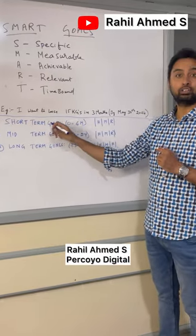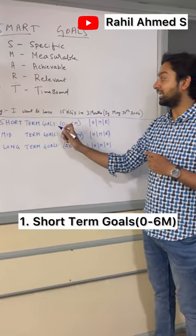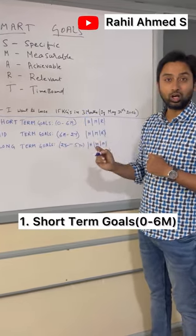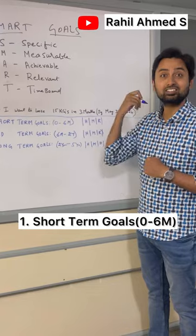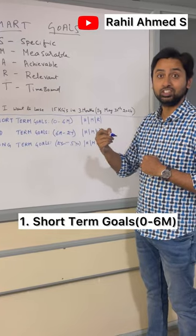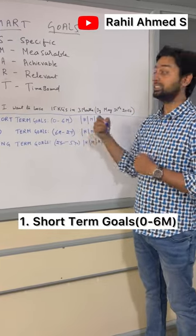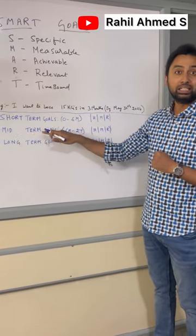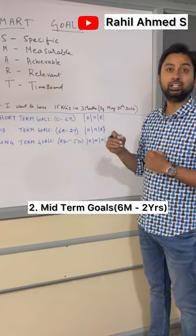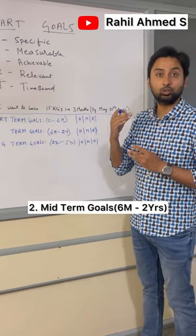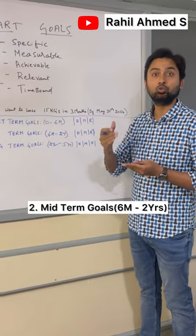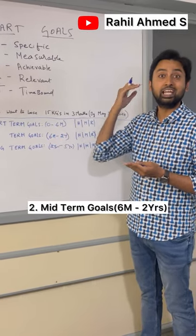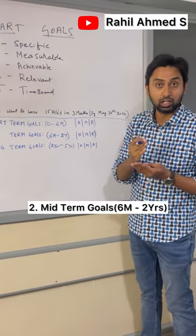A short-term goal is one that you want to achieve under six months — that is zero to six months. The next type of goal is a mid-term goal. Mid-term goals are the goals that you want to achieve in a six months to two years time duration.